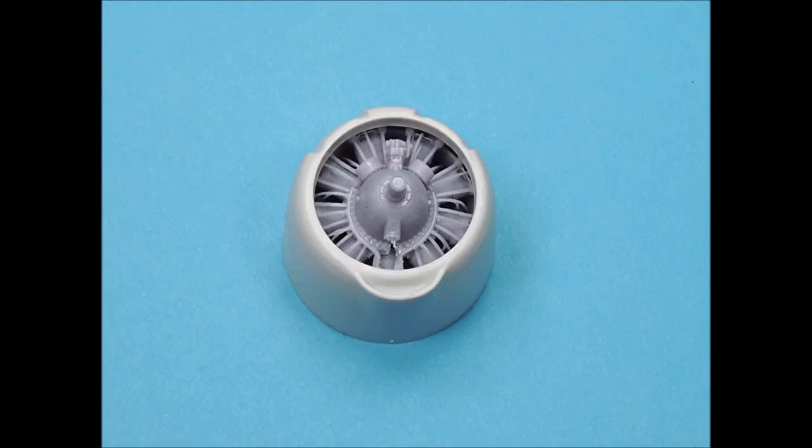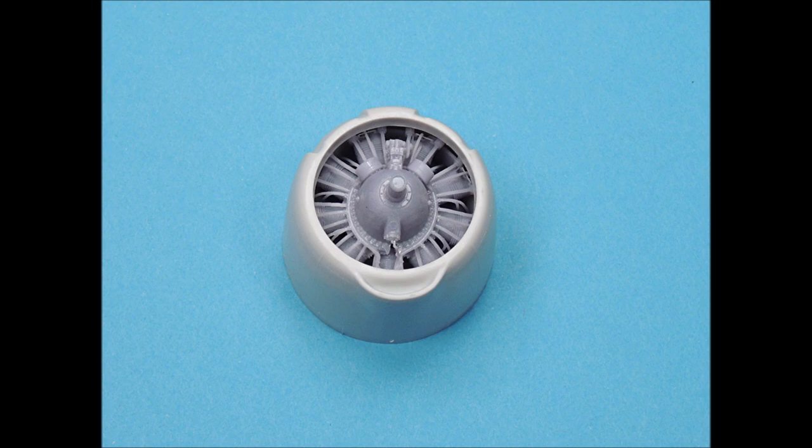When I originally built this kit, 3D printed parts were not available. However, now Resin 2 Details has a 1:48 scale R2800 engine that fits perfectly inside of the AMT cowling. It includes both the wiring and the pushrods and all you have to do is detail paint it.